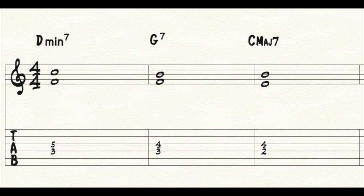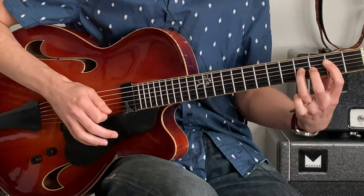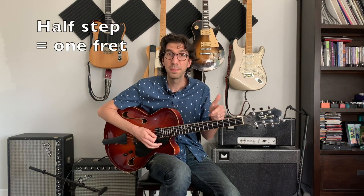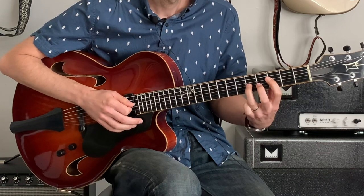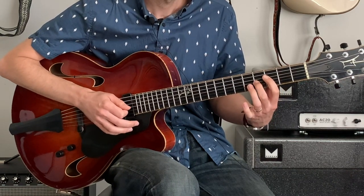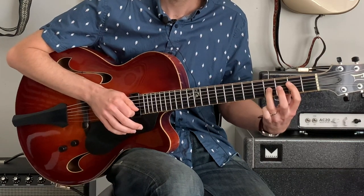So our whole 2-5-1, just using 3rds and 7ths, sounds like this. We're either moving the voices down a half step or keeping them the same. In the D minor 7, we move the C down a half step to get to G7, and from G7 we move the F down a half step to get to C major 7.